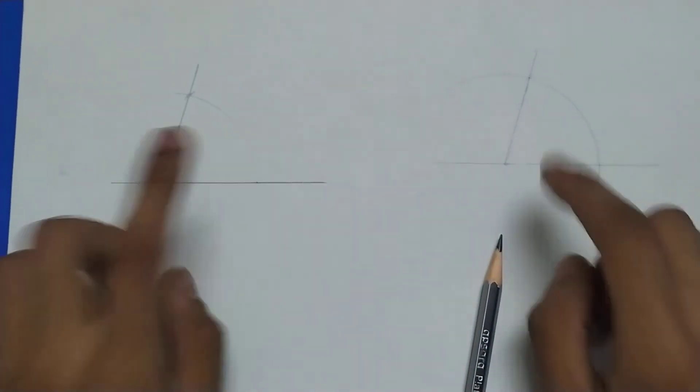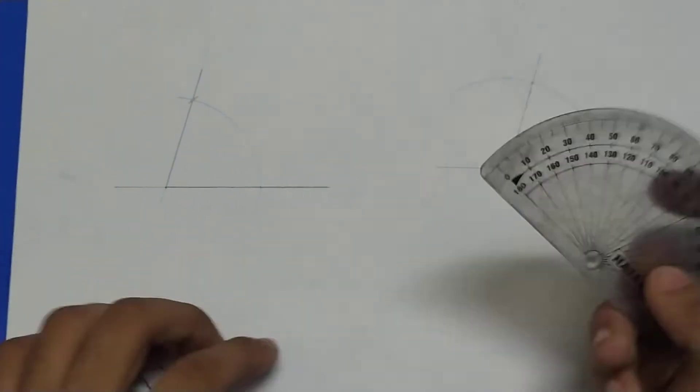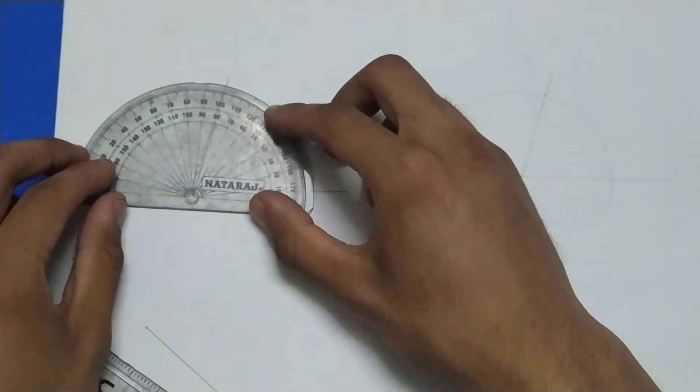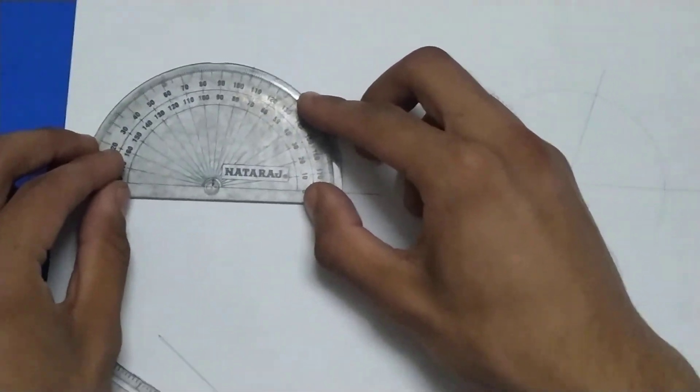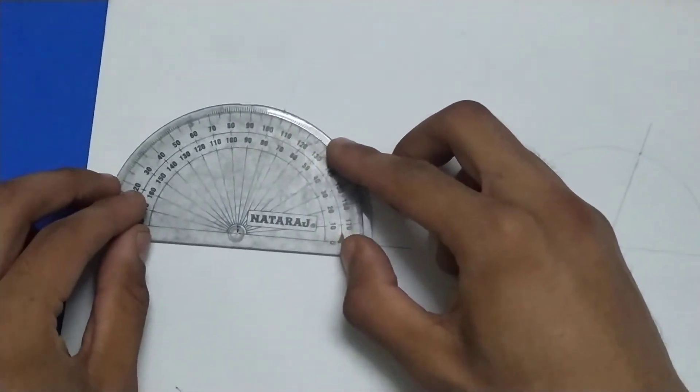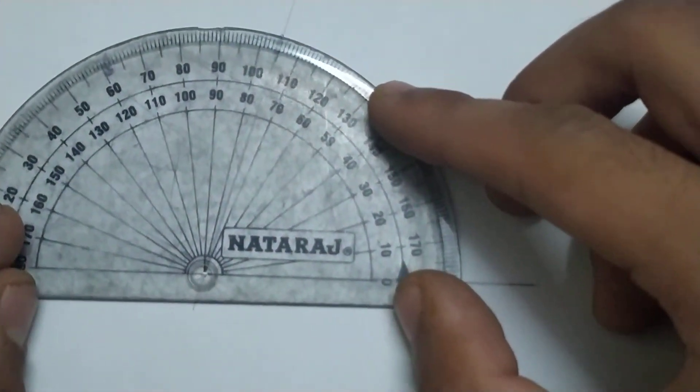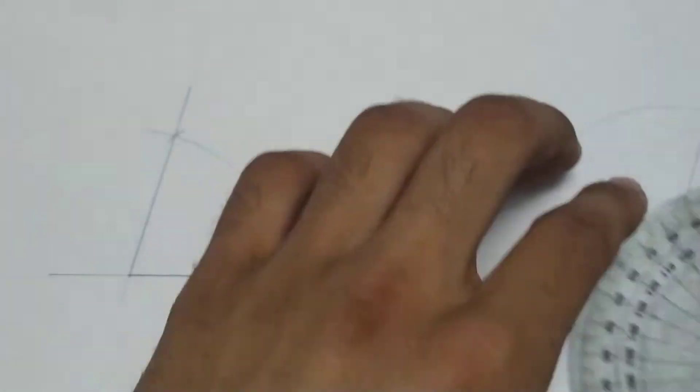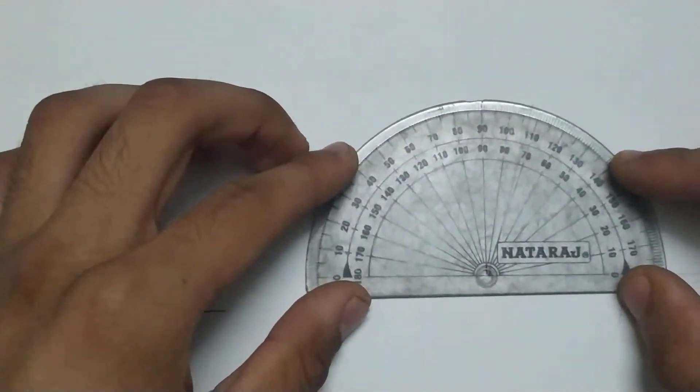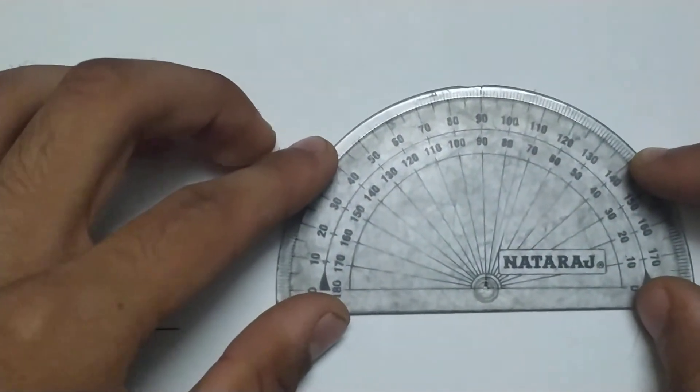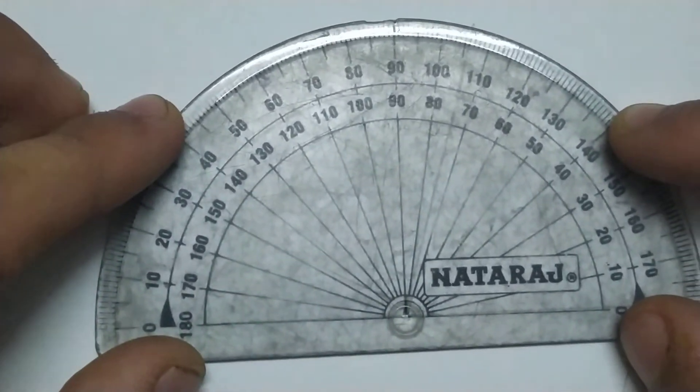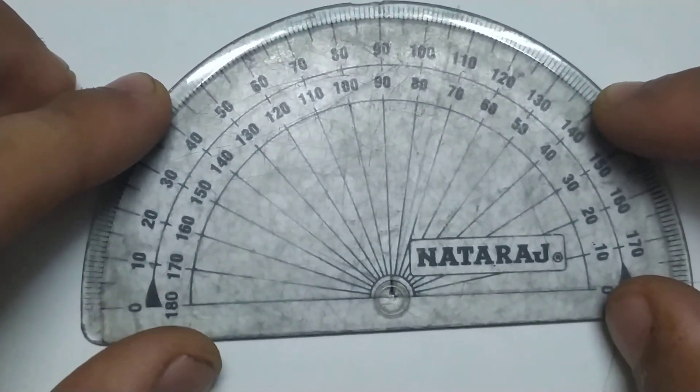These two angles will be the same. Let's measure them. This one is almost 75 degrees and this one is also very close to 75 degrees.